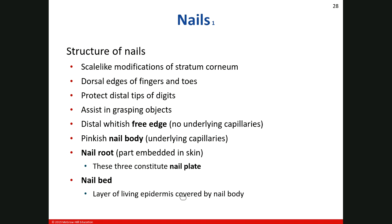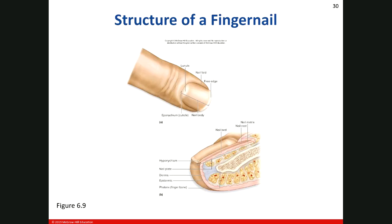The nail bed is what the nail sits on, on your finger or toe. It's made up of the living portion of your epidermis. The nail bed is covered by the nail plate — the plate is like the sheet to your bed, and the mattress is like the nail bed. You can see it's this pinkish area all the way underneath where the nail plate sits right on top.